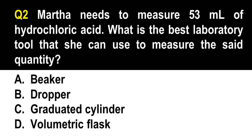Number 2. Martha needs to measure 53 ml of hydrochloric acid. What is the best laboratory tool she can use? A. Beaker. B. Dropper. C. Graduated cylinder. D. Volumetric flask. The correct answer is letter C, graduated cylinder. Graduated cylinders have a smaller width than beakers, making beakers better for stirring and mixing, but for measuring volumes like 53 ml, a graduated cylinder is used. Meanwhile, volumetric flasks are used for dilutions and preparation of solutions.